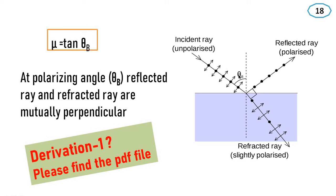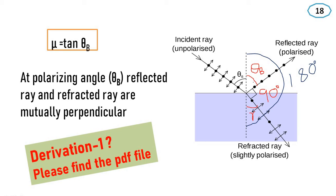This angle is theta b. We know that the angle of incidence equals the angle of reflection, so the reflected angle is also theta b. This angle between reflected and refracted rays is 90 degrees, and the angle of refraction is represented by r. From the diagram, theta b plus 90 plus r equals 180 degrees, since they form a straight line.